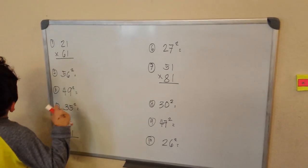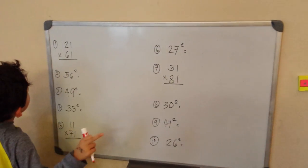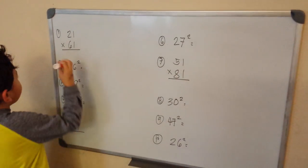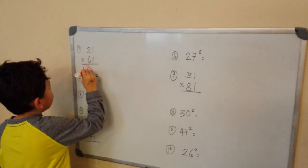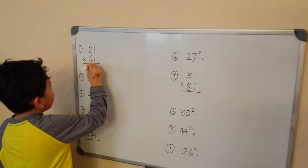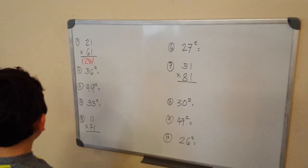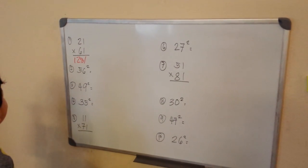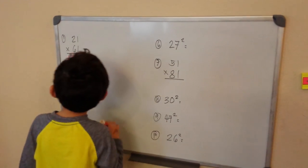2 plus 6 is 8, so 120 plus 8 is 128. And put a 1 at the end, which is 1,281. That's the answer.